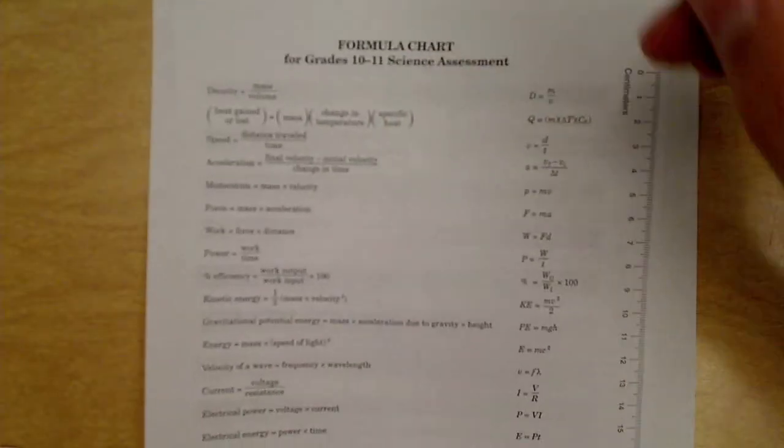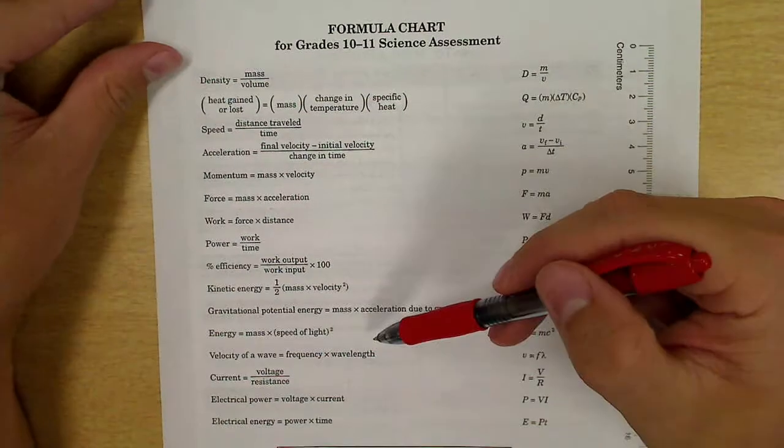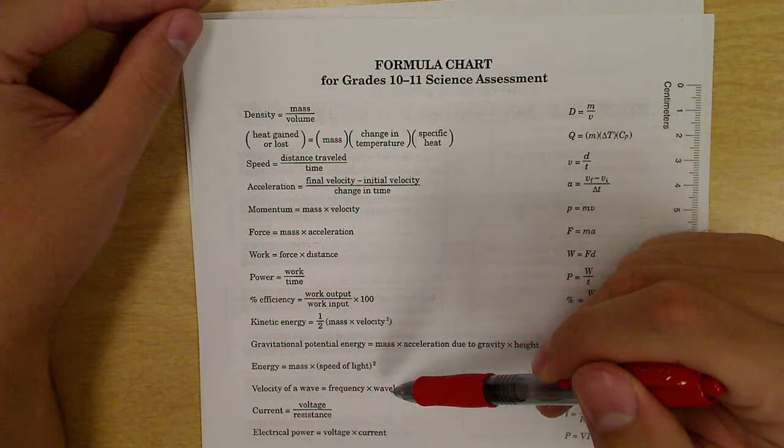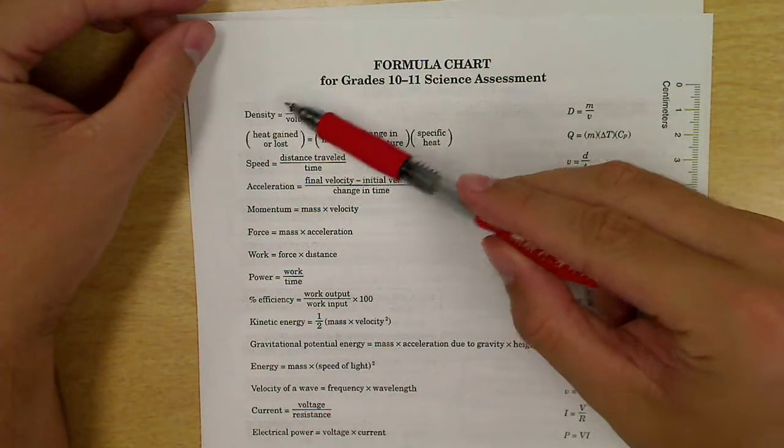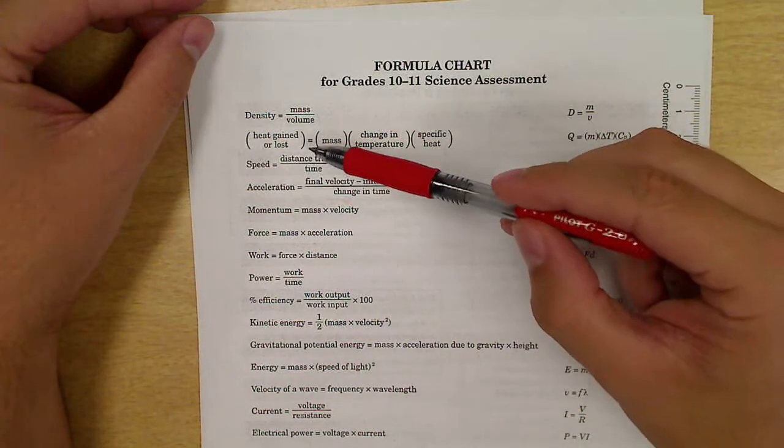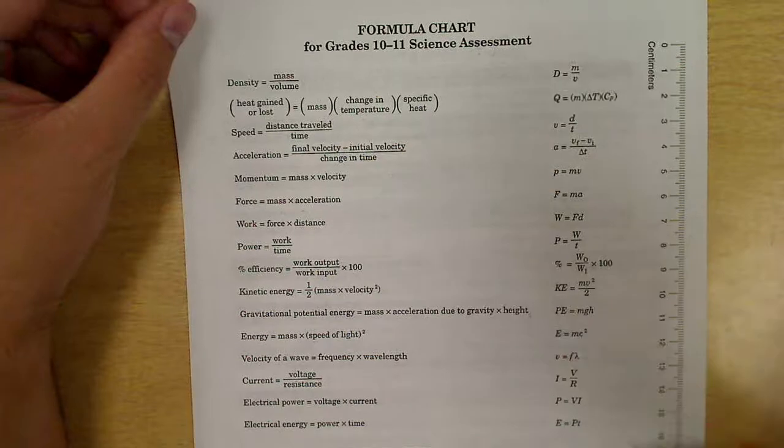All of our options are on this formula chart. One of these words is what that measurement is. And you can just read right down through for your options. It could be a density, a mass, a volume, heat, mass, change in temperature, specific heat, speed, distance, time, acceleration. It's one of these. You can see it's a long list, but one of these is what it is.